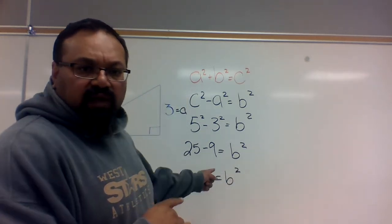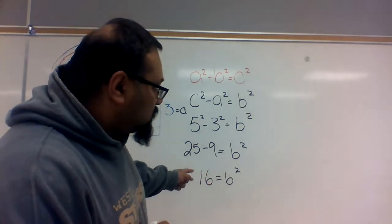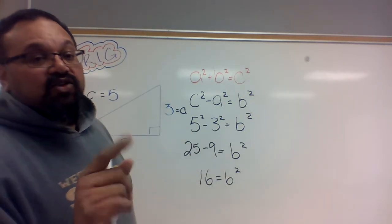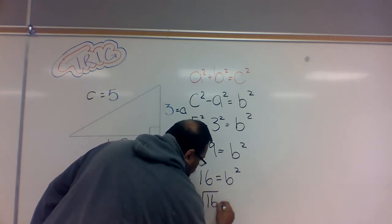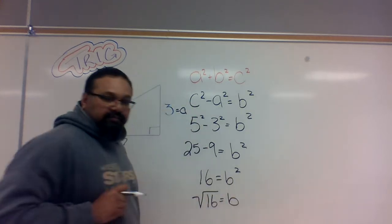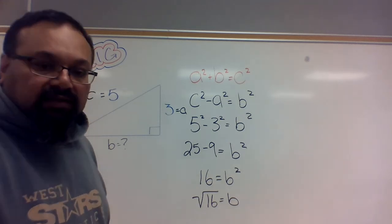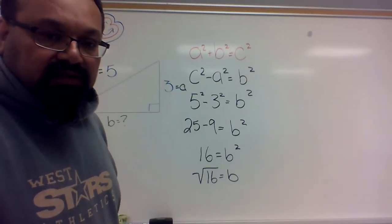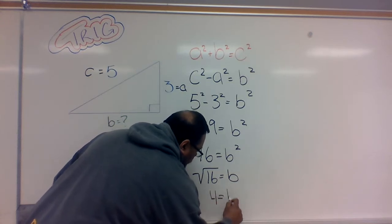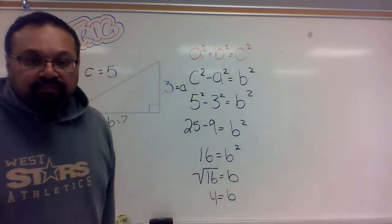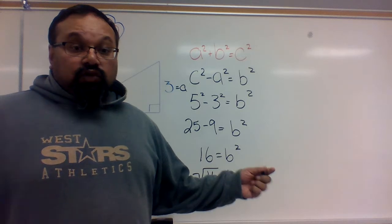Someone want to remind me, how do I get rid of the squared? That's right, square root. Now finally, the square root of 16 is going to give you B equals 4. That's the first example. Second example, quickly erase this.